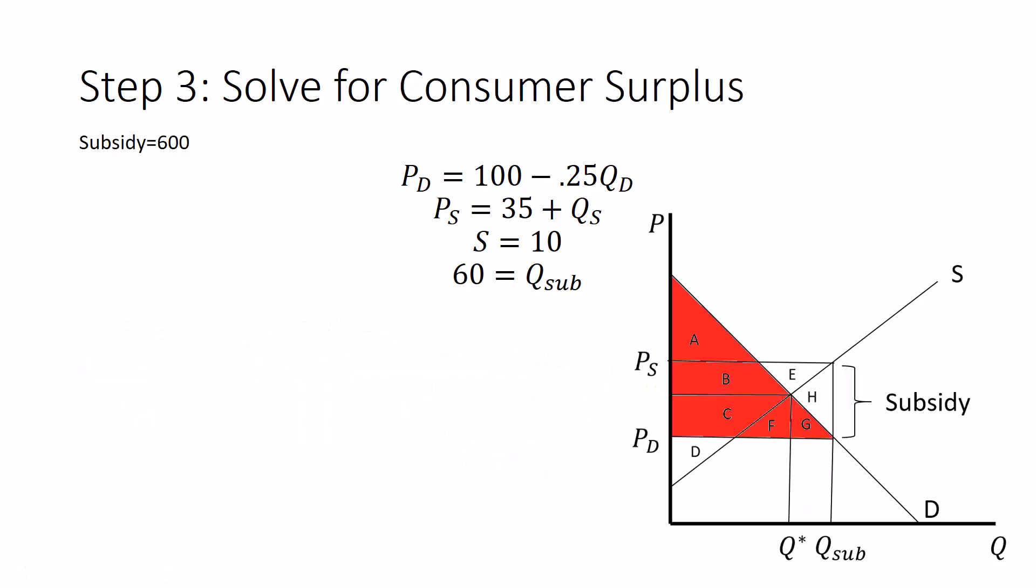Next, we wanted to solve for consumer surplus, which in my previous video looked something like this. What is the area of this triangle? How many dollars of extra willingness to pay are in this market? So we need to know this PD, which we can solve for. We know the Q sub. We've already solved for it. It's 60. And we need to know this choke price, which since we have an inverse demand curve, is just the intercept. So it's 100.